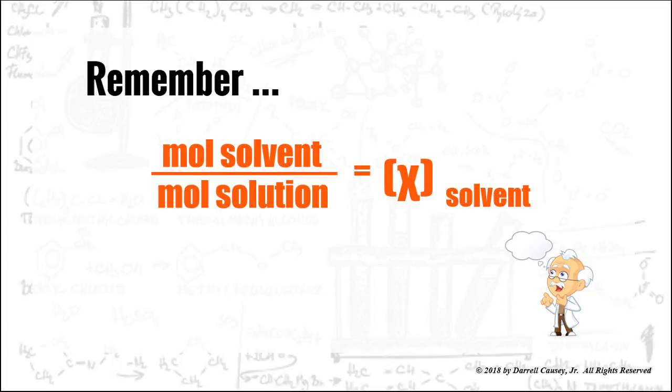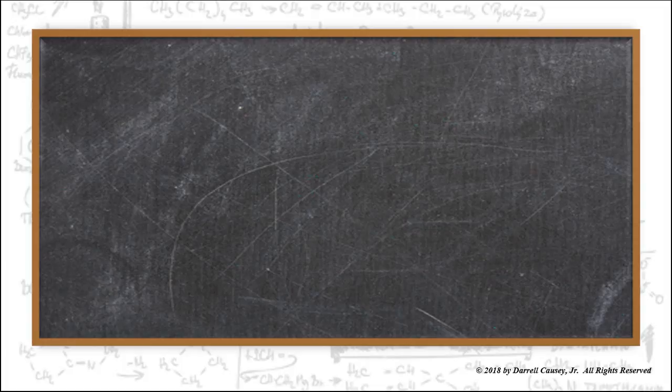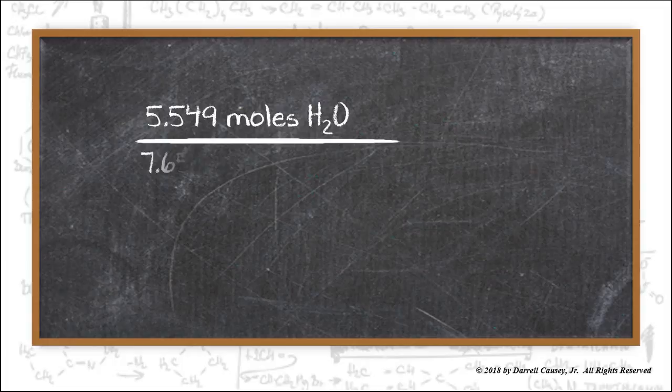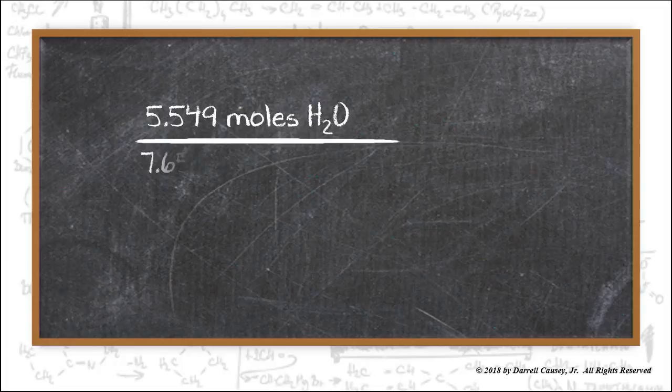Now remember, moles of solvent per moles of solution will give us the mole fraction of the solvent. So to the blackboard, 5.549 moles of water divided by the total moles of solution, 7.656, will give us a mole fraction of 0.7248.